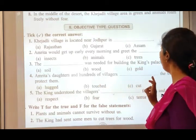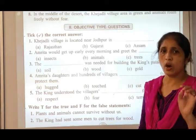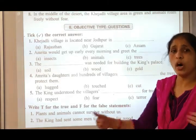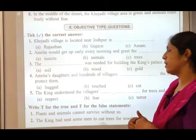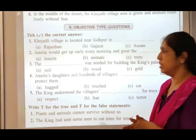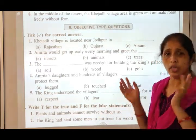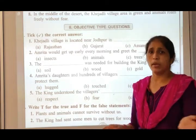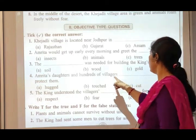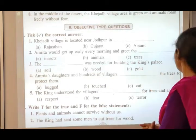Fourth question: Amrita's daughter and hundreds of villagers did what to the trees to protect them? They hugged the trees to protect them — they held on to the trees. So the answer is: Amrita's daughter and hundreds of villagers hugged the trees to protect them.